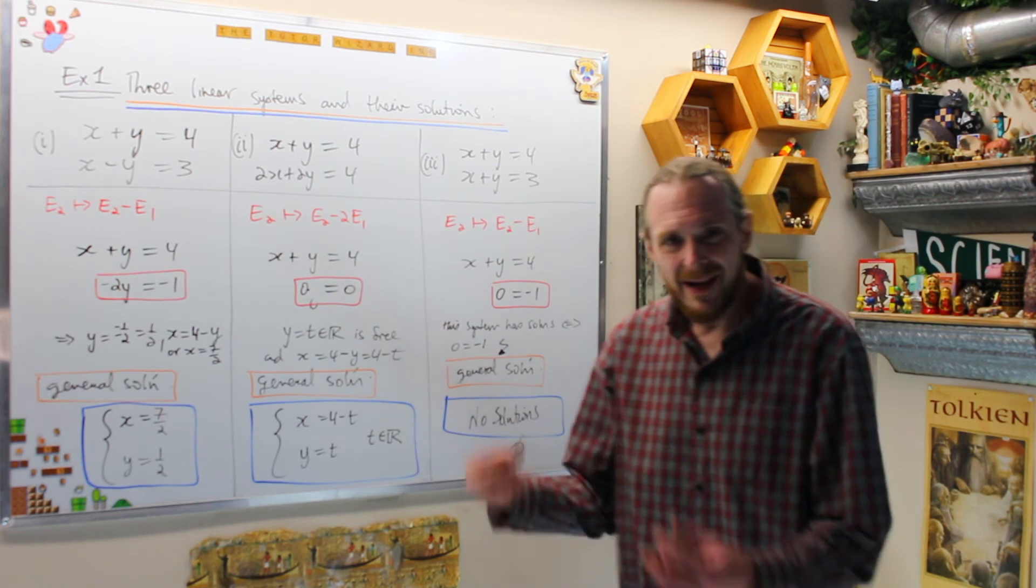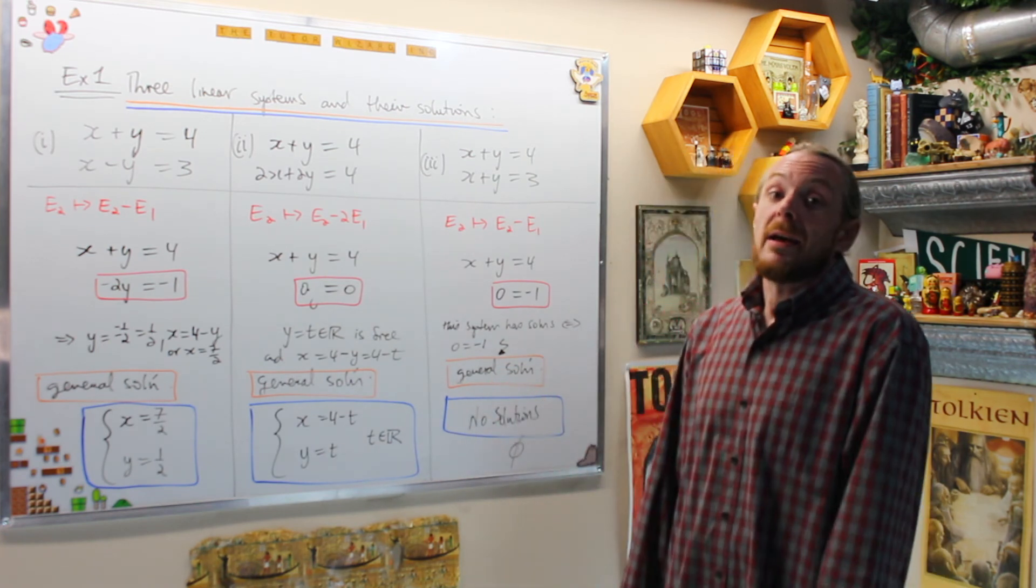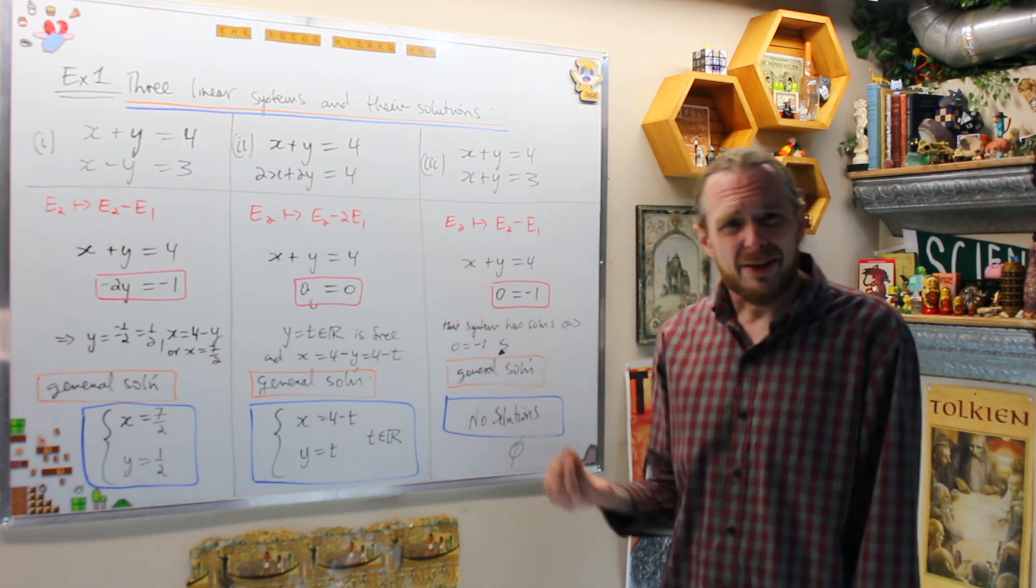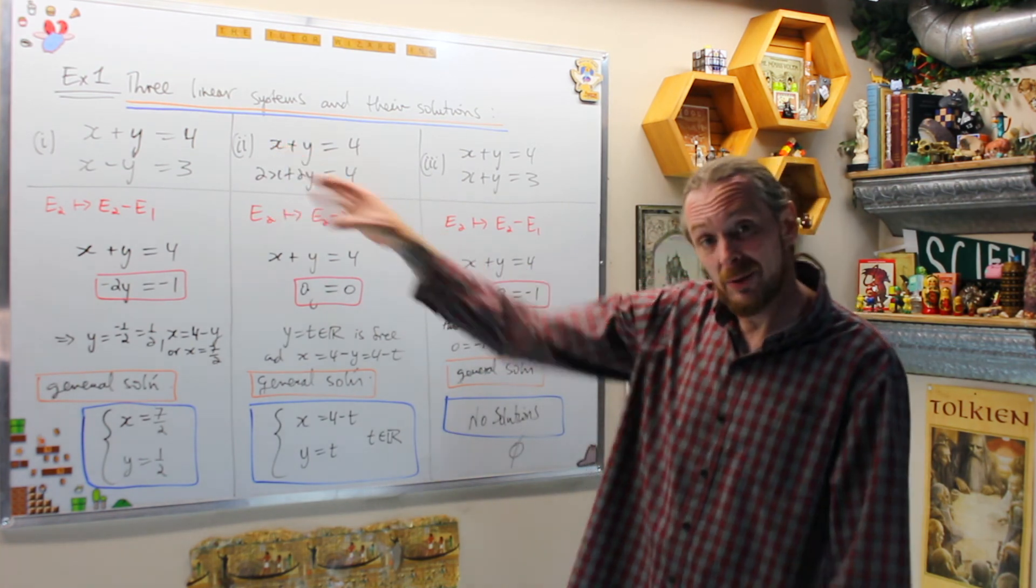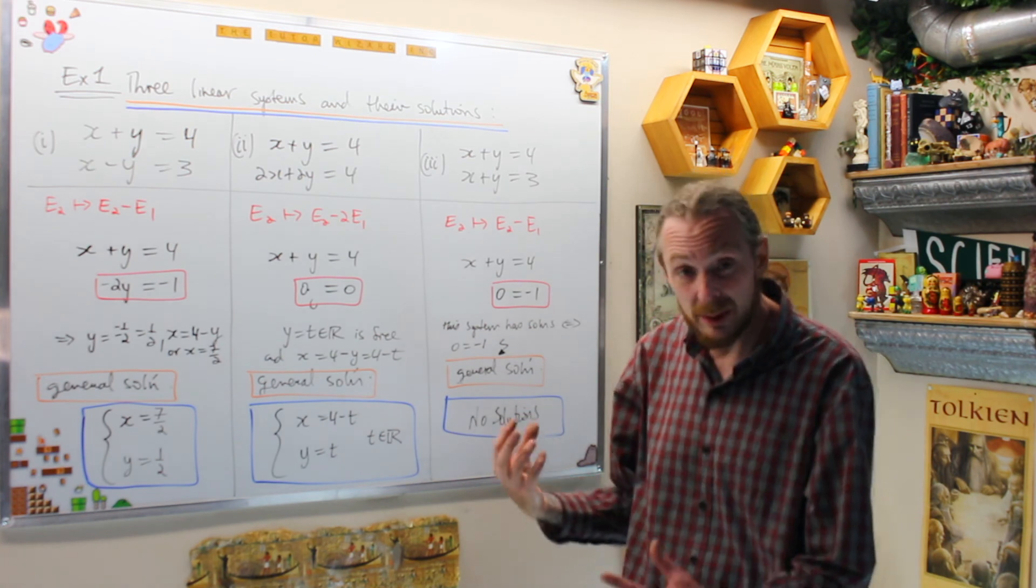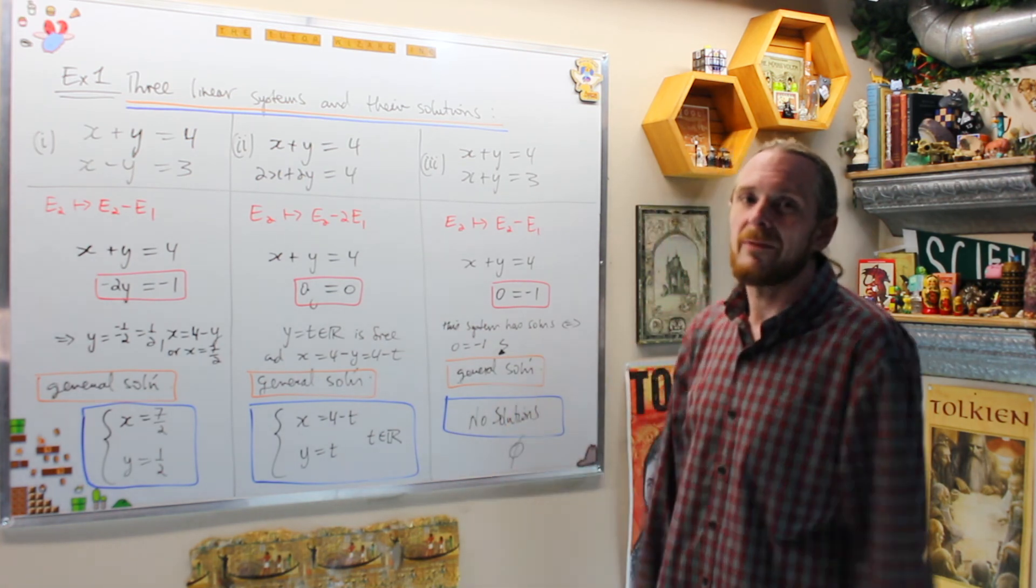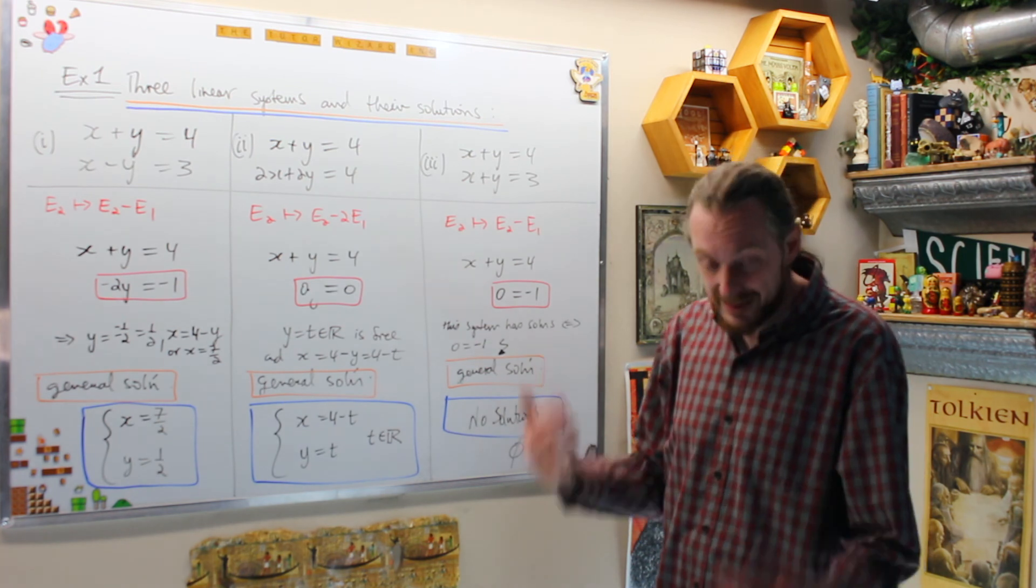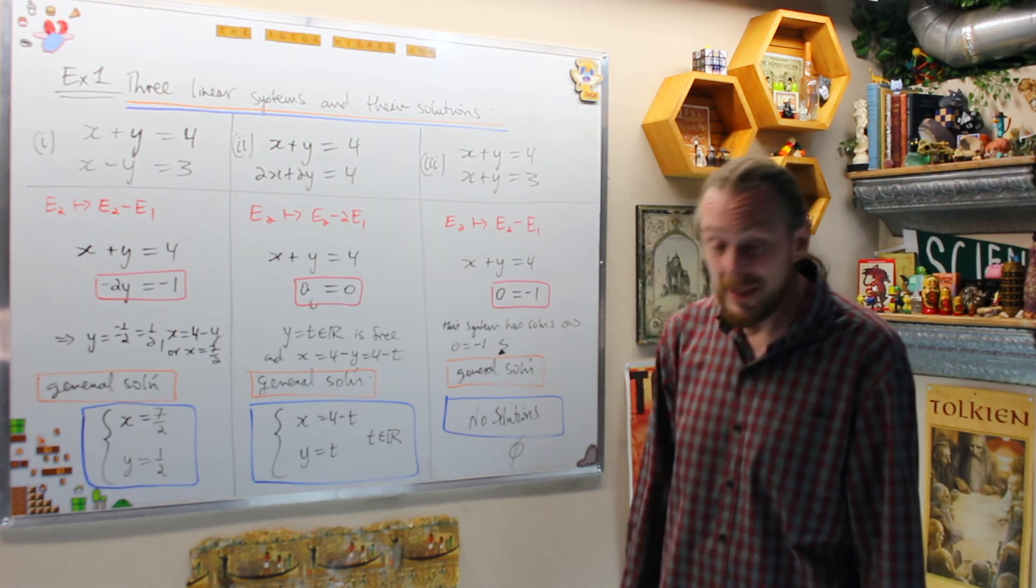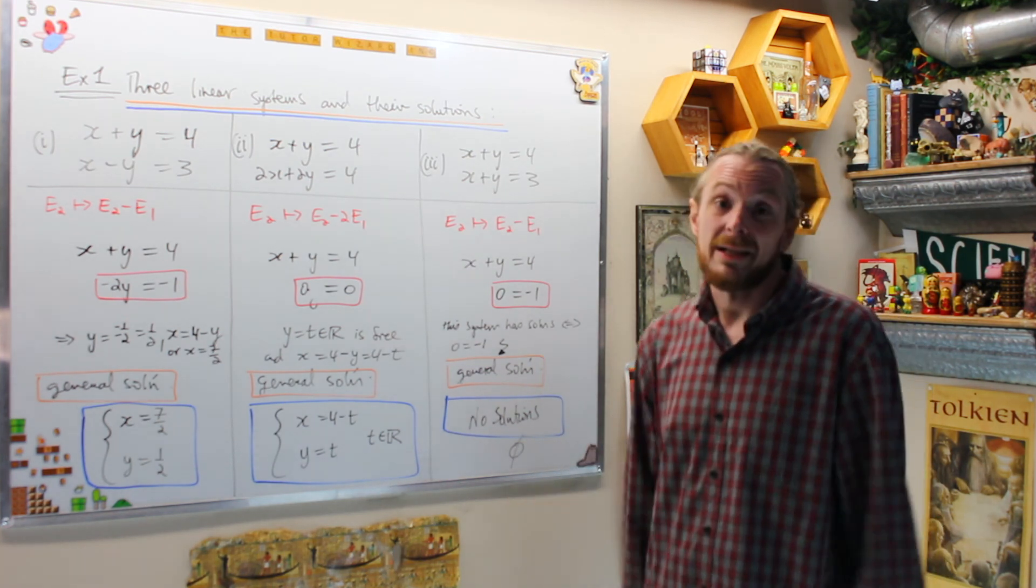What we're going to do next time is define an augmented matrix of a linear system and then get three row operations which systematically allow us to take the original system and transform it into an equivalent system which has the same solutions. Then we can read off essentially what the solution to both systems are, and this gives us a systematic method of solving M by N linear systems called Gaussian elimination.